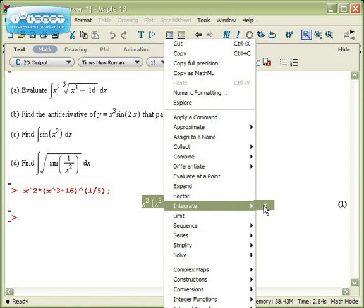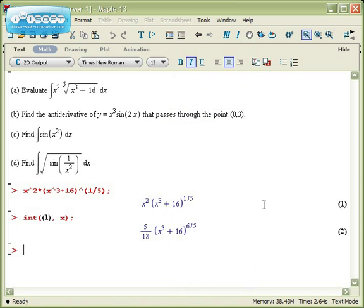And right there in the middle is integrate with respect to the variable x. And I can see that the command for integration is just int with a comma and the x. This is sort of like the dx term. And it tells me that the antiderivative is 5/18 times x cubed plus 16 to the 6/5 power. Notice that Maple doesn't put an integration constant. It doesn't include a plus c. Maple will assume that you will remember to do the plus c. And that ends up becoming important on certain kinds of problems.